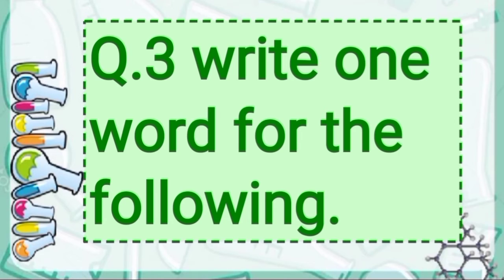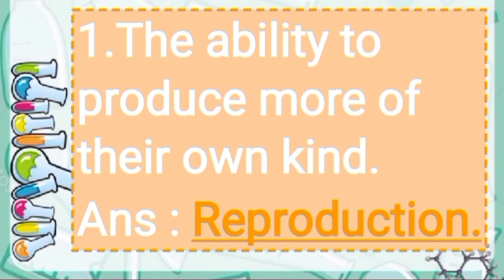Write one word for the following. First question: the ability to produce more of their own kind. The answer is reproduction. Animals reproduce by two methods: laying eggs and giving birth to young ones.